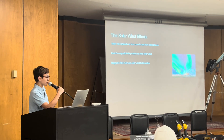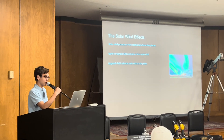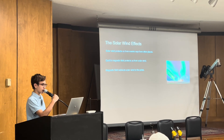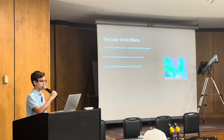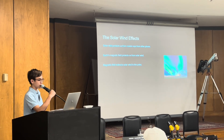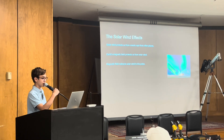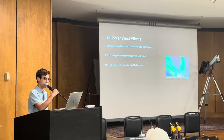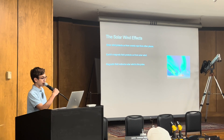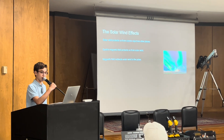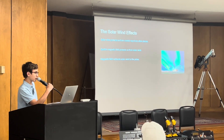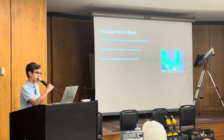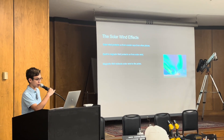The solar wind actually protects us from cosmic rays from other places in the universe. However, the Earth's magnetic field also protects us from the solar wind so it doesn't have adverse effects on our electrical systems. The magnetic field directs solar wind to the poles, and that's actually why you can see the aurora borealis up at the North Pole and South Pole.